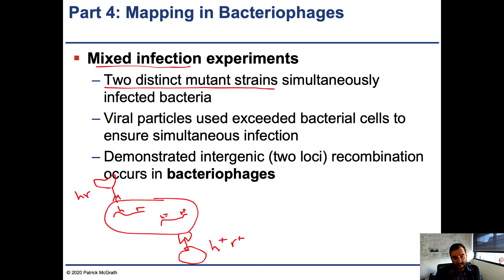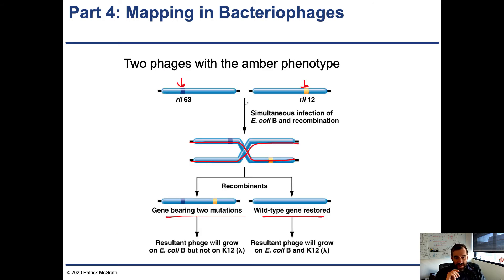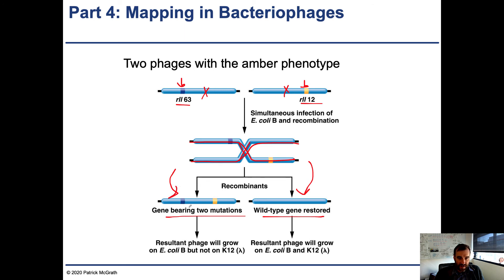You have one viral particle of one genotype and another viral particle of another genotype, and they both inject their DNA into the cell at the same time. So you can have a cell that has DNA from two independent phages with different genotypes. Once that happens, recombination can occur between these pieces of DNA. Typically, what happens is a linear crossover where you create two new allele combinations — two recombinants.